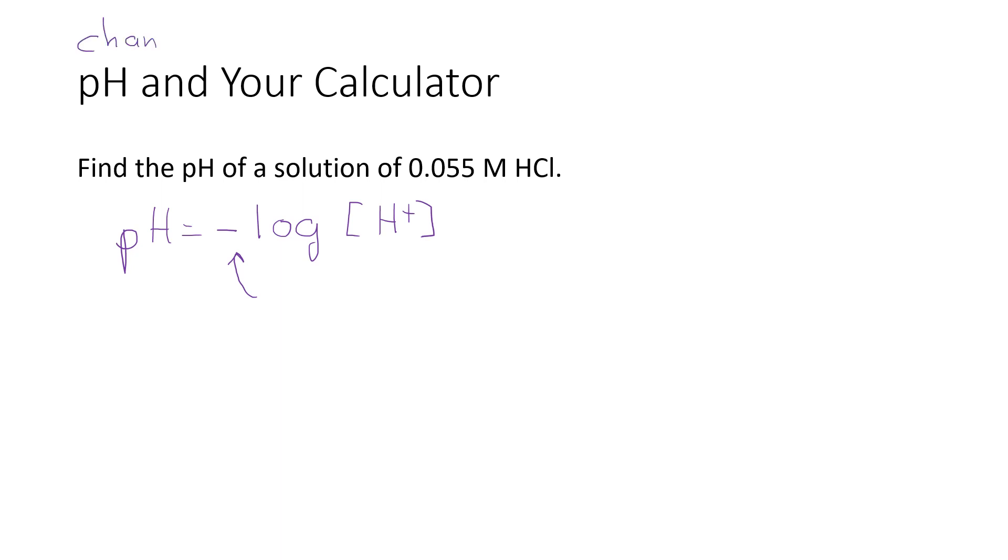Some calculators, they put the negative sign in parentheses. Some calculators say something like plus slash minus. Some calculators have something like a plus and a minus, and then they have arrows interconnecting the two. So we're looking for whatever key on your calculator is used to change sign.